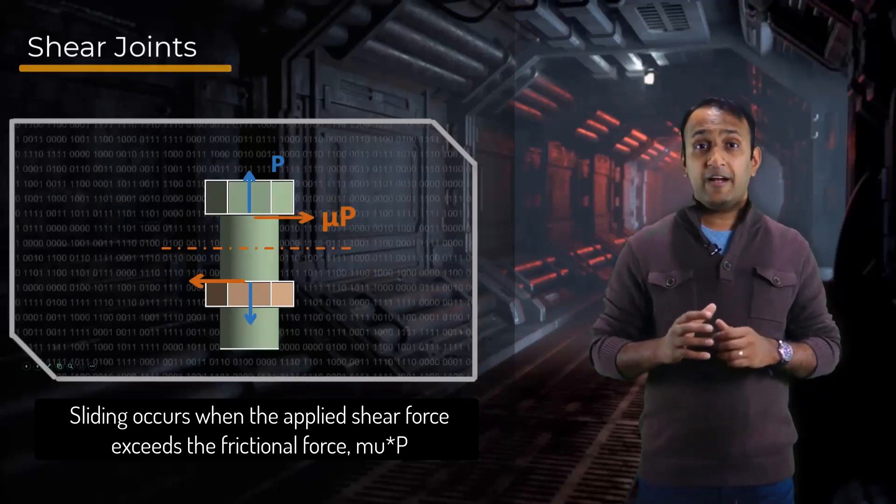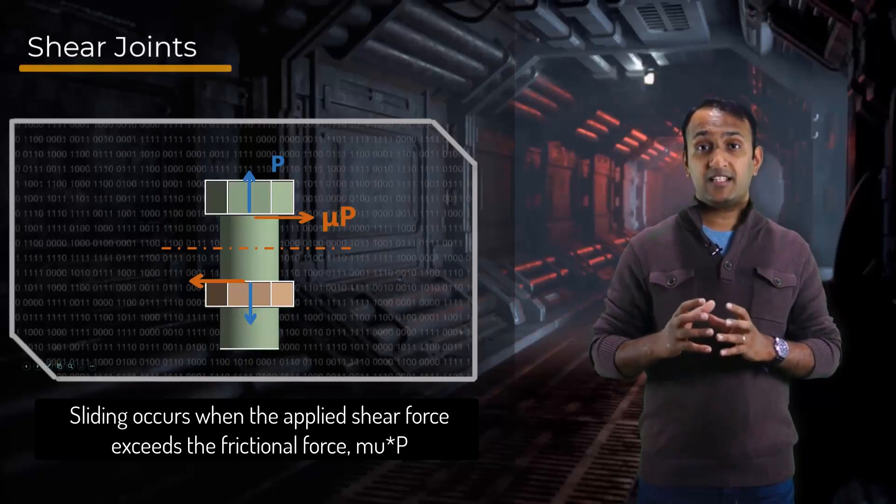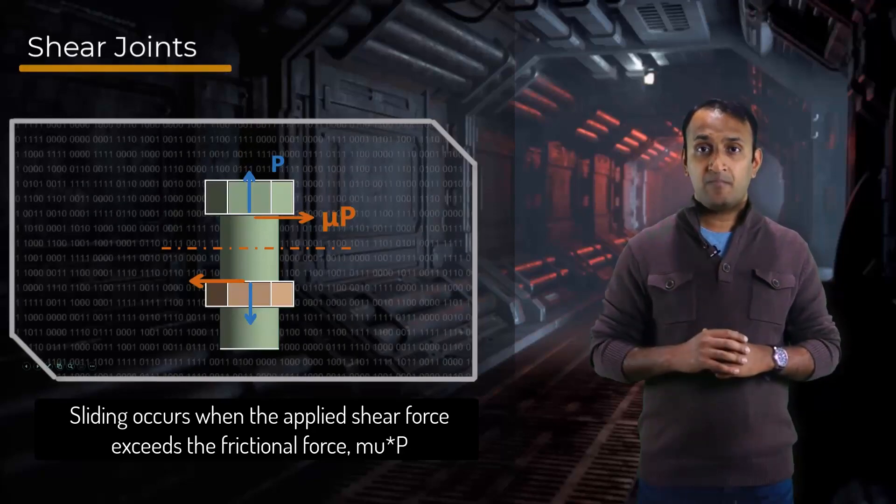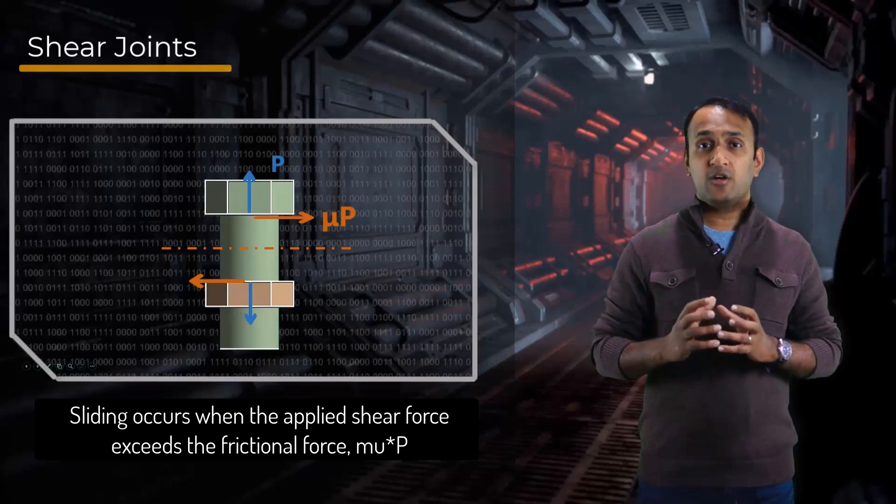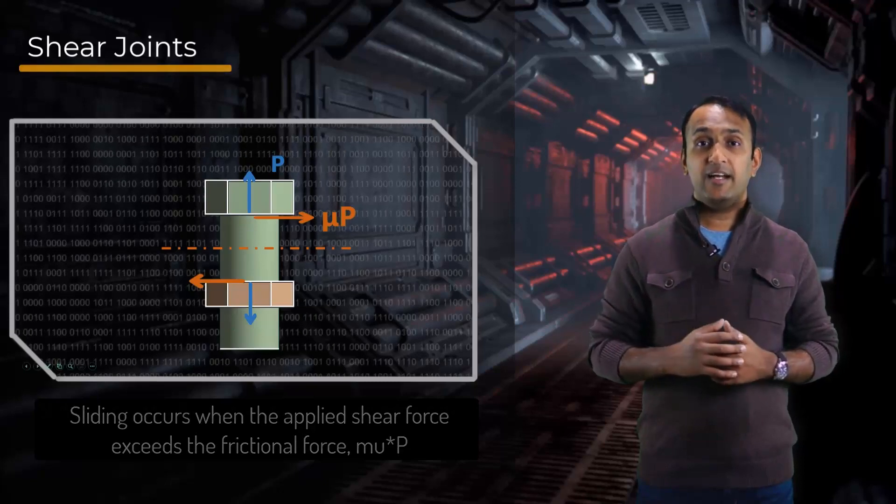If the applied force is greater than the maximum frictional force between the parts, then it results in gross sliding and eventually leads to failure of the joint. Also, in this type of joint, the bolt is under shear loads, so its shear strength is another important requirement for the design. Due to this reason, partially threaded bolts are generally preferred for such joints.